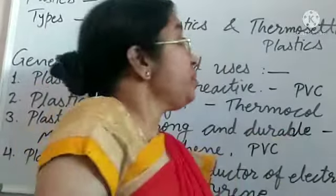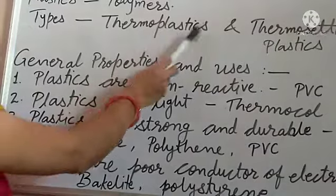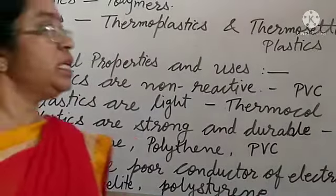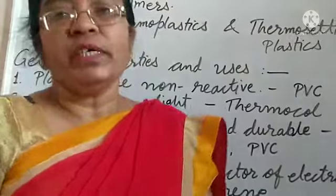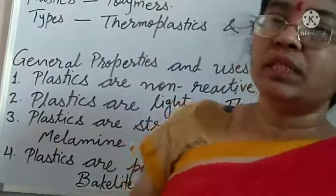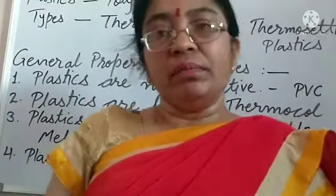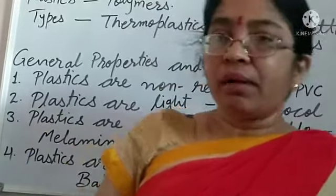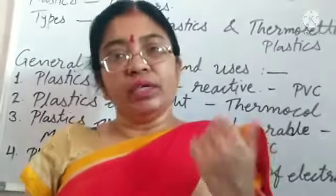Now, types of plastics. There are two types of plastics: thermoplastics and thermosetting plastics. First, thermoplastics — this is the type of plastic that we can reuse. We can recycle it.